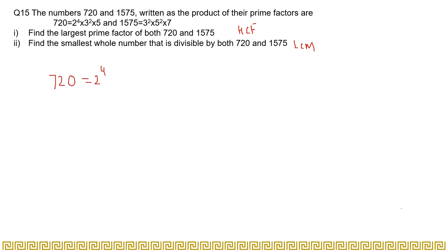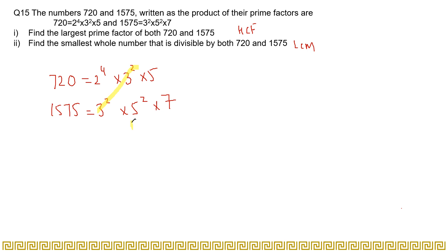Let's write the numbers again. 720 is equal to 2 to the power 4, times 3 squared, times 5. And 1575 is equal to 3 squared multiplied by 5 squared multiplied by 7. Now look at the common factors in both of these numbers — for HCF you find the product of the common factors. We have 3 squared as common in both, and 5 is also common in both.